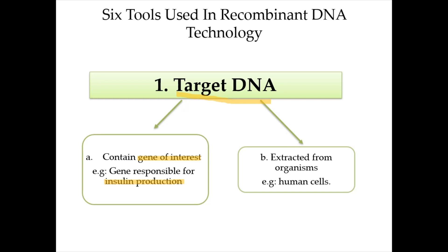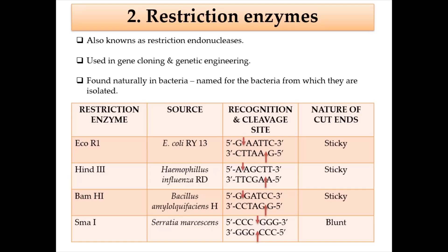Most genes of interest are extracted from organisms, for example from human cells. The second tool is restriction enzymes, also known as restriction endonucleases. Examples include EcoRI, HindIII, BamHI, and SmaI. These enzymes are used in gene cloning and genetic engineering. The names of restriction enzymes are derived from the bacteria they come from — EcoRI from E. coli, HindIII from Haemophilus influenzae, and so on.